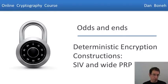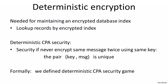Now that we understand what deterministic encryption is, let's see some constructions that provide security against deterministic chosen plaintext attacks. Deterministic encryption is needed, for example, when encrypting a database index and later looking up records using the encrypted index. Because the encryption is deterministic, we're guaranteed that when we do the lookup, the encrypted index is going to be identical to the encrypted index that was stored when the record was written to the database.